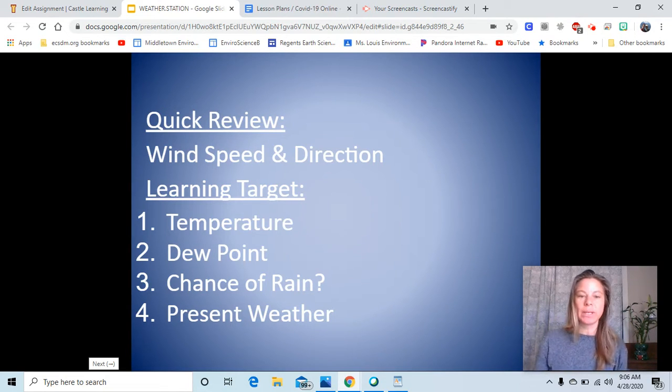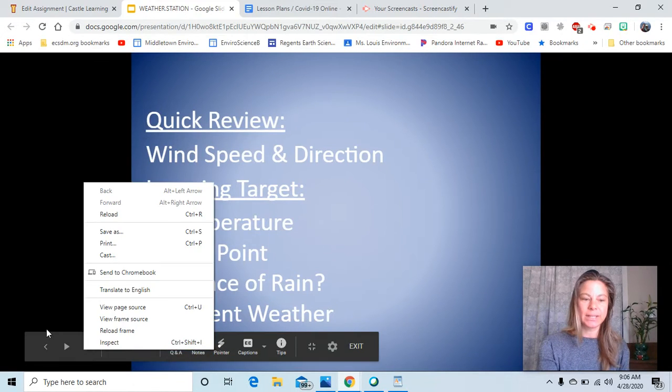We'll do a quick review of wind speed and direction, and then we will look at where they put the temperature, the dew point, how they use those two points to look at what the chance of rain would be, and how we represent the present weather. So let's get started.